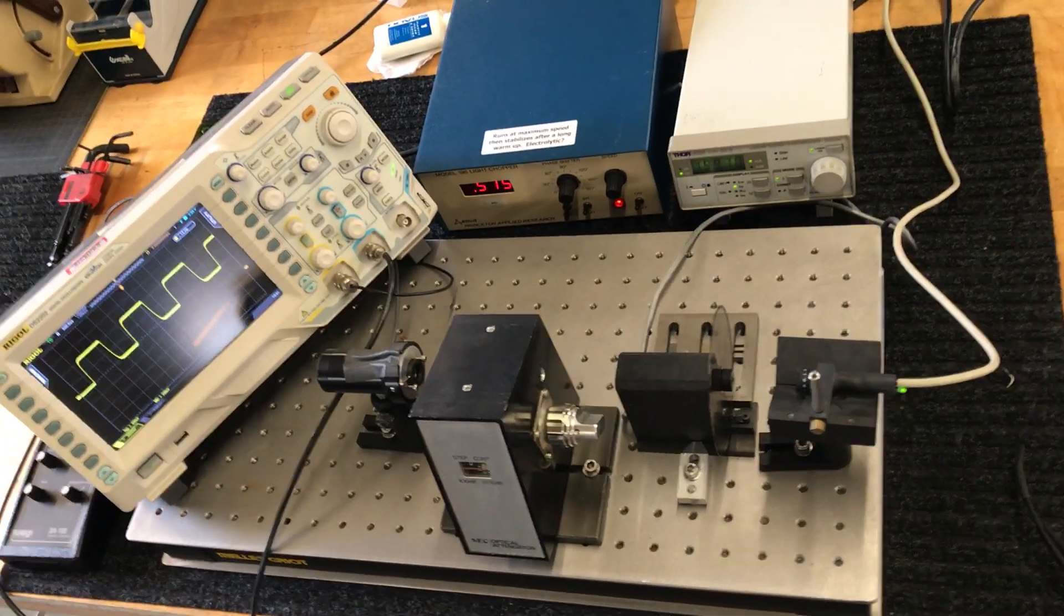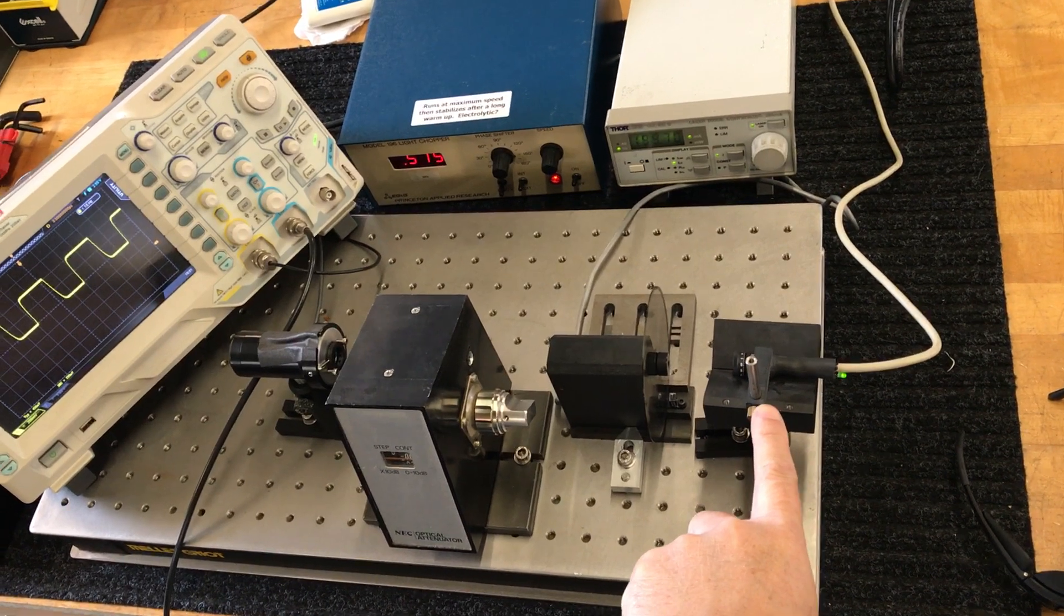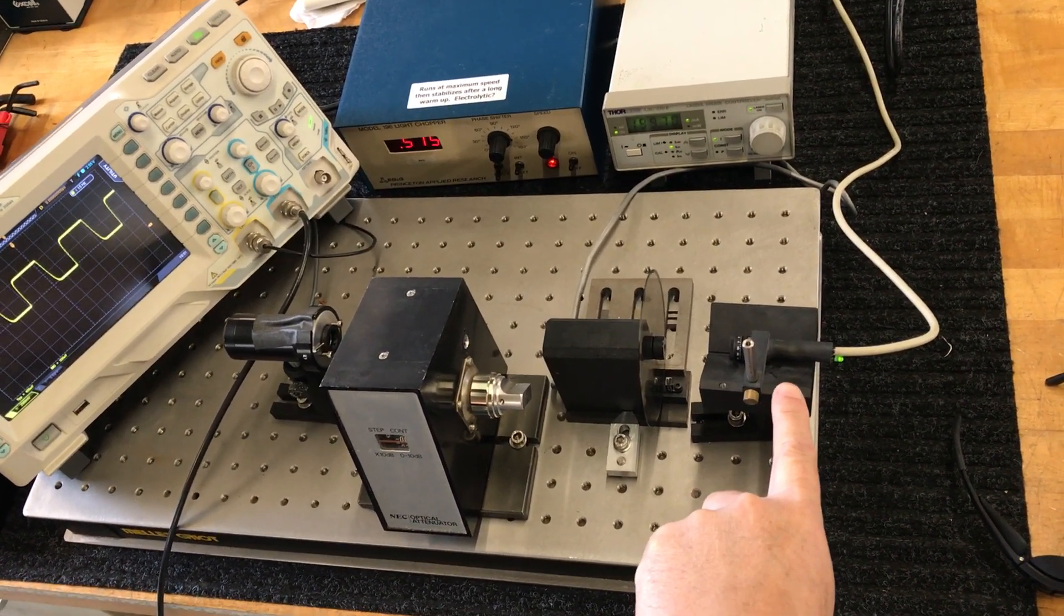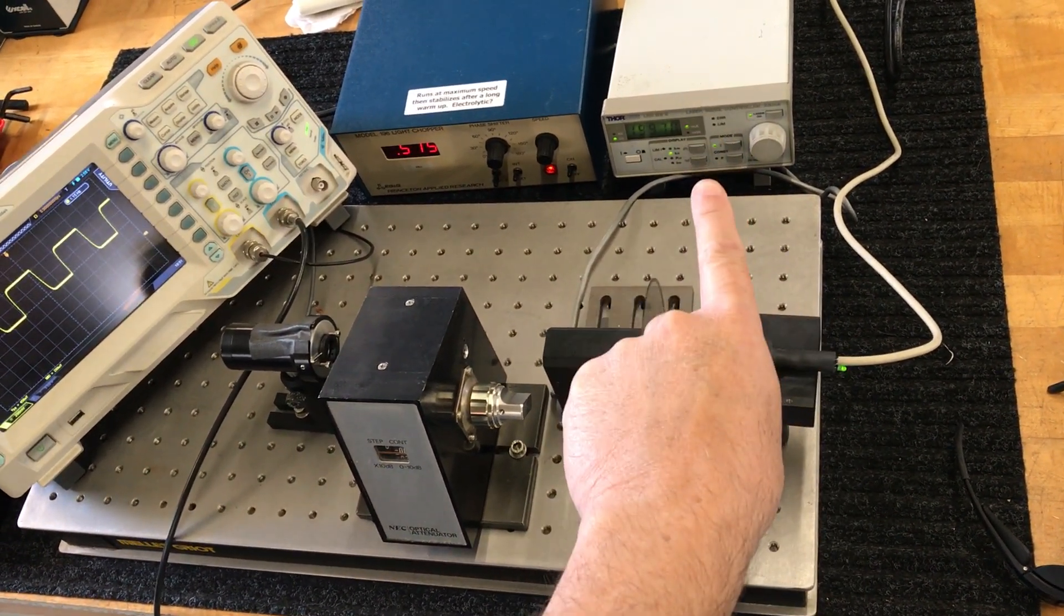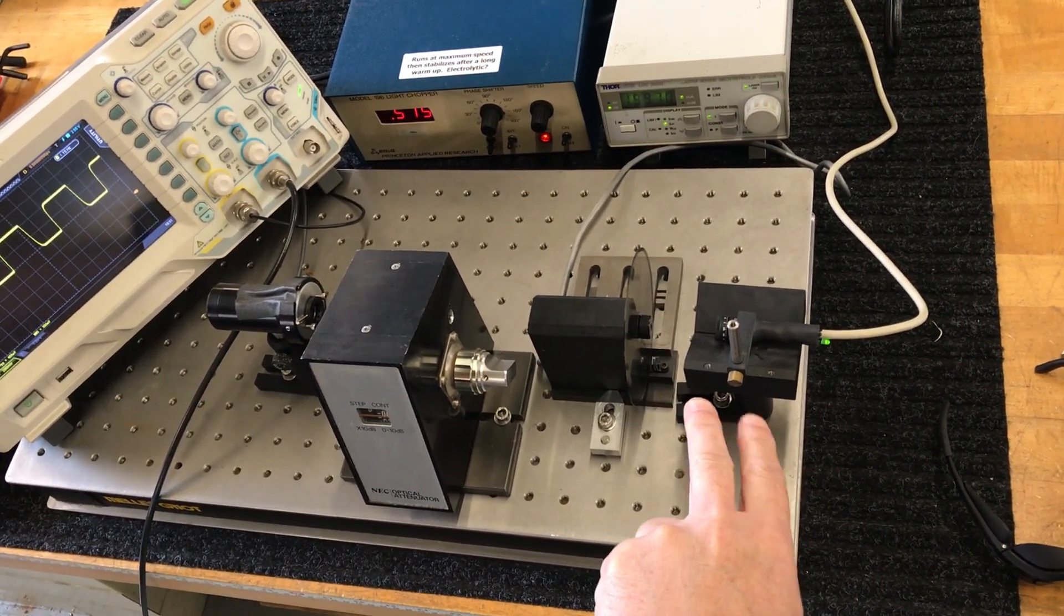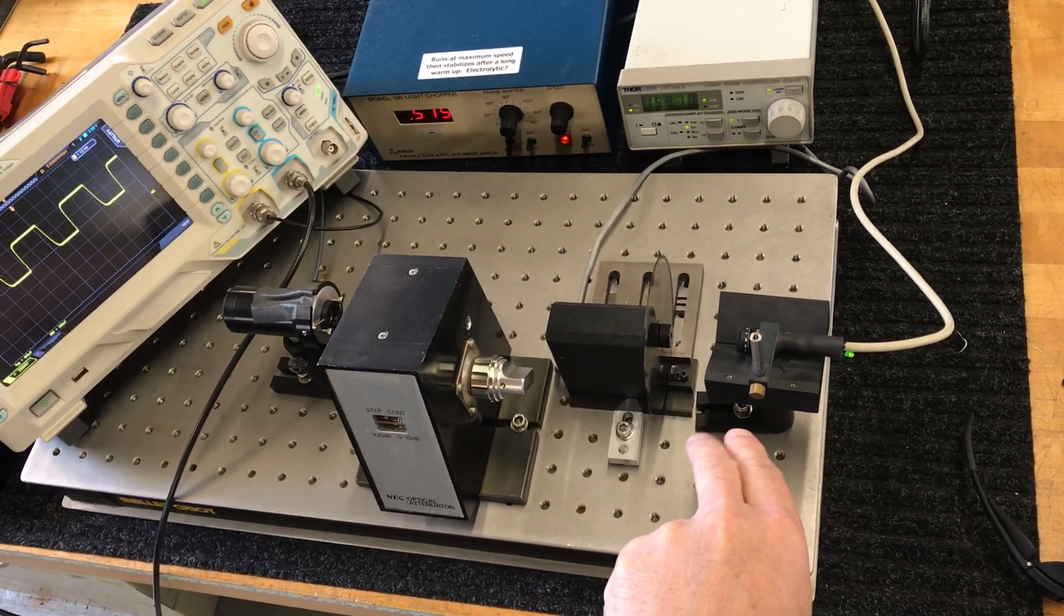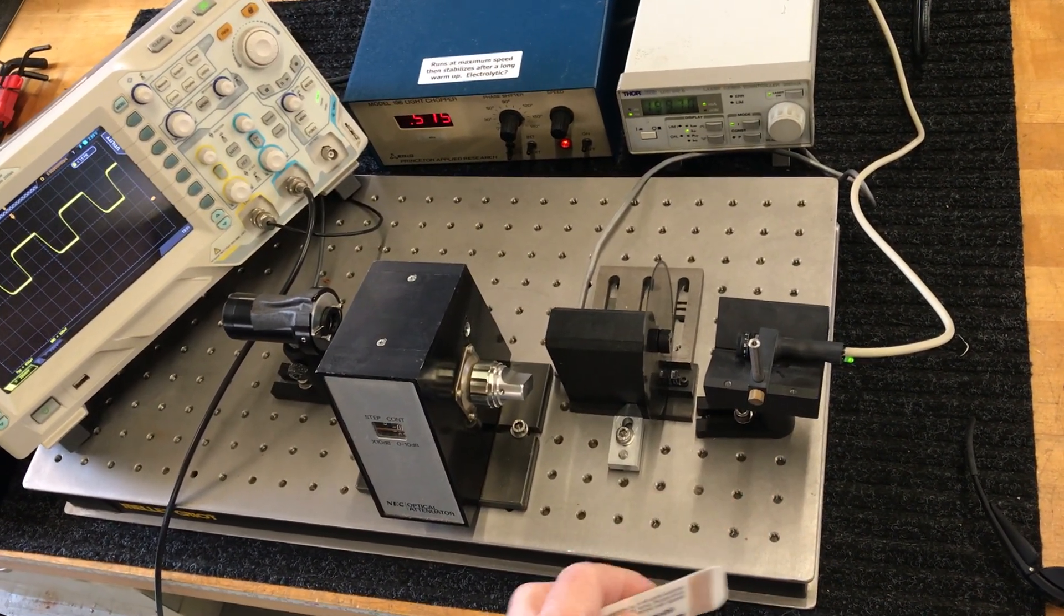What this setup is, is there's a 1064 nanometer laser diode here with a laser diode controller. I'm running this at 200 milliamps, so about 100 milliwatts or so coming out of here, and that's infrared invisible.